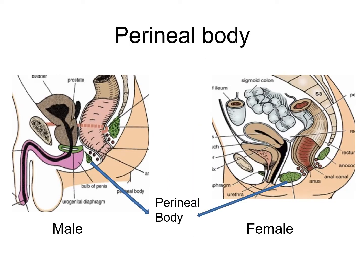The perineal body is found in both males and females. In males, it is found between the bulb of the penis and the anus. In females, it is found between the vagina and the anus, approximately 1.25 cm in front of the anus.